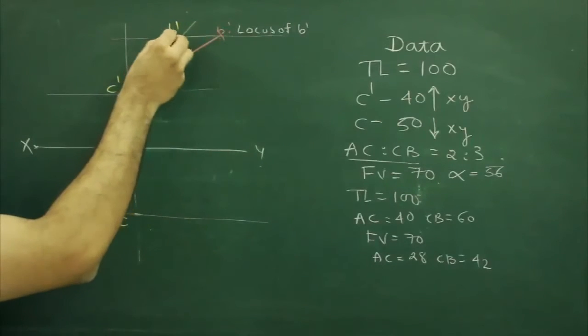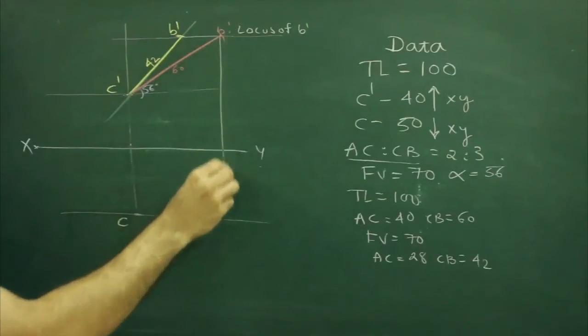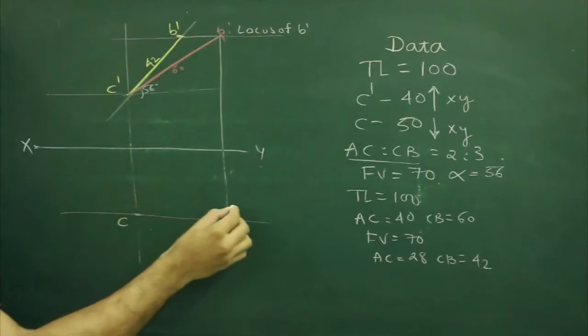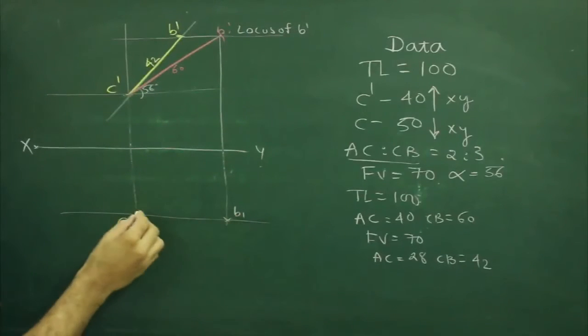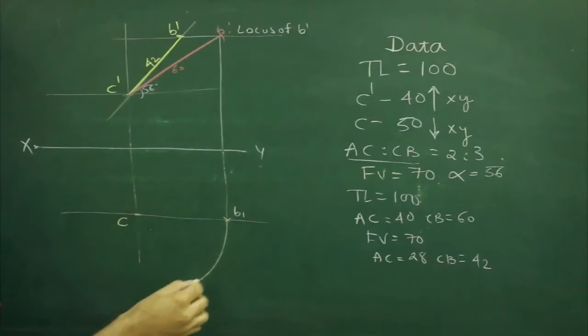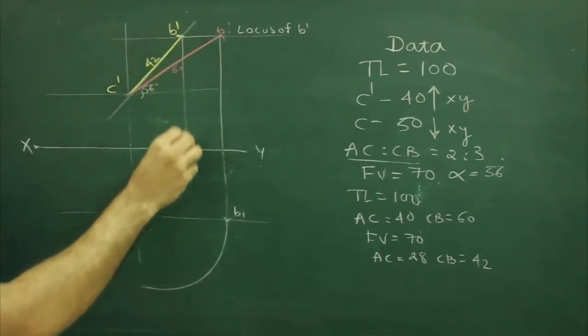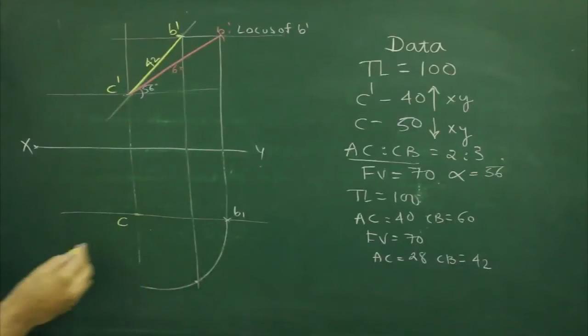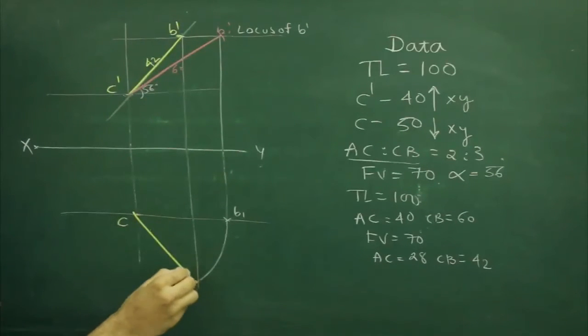Now we have B1 dash as well as B dash, we will project this B1 dash down till here, that will be B1, take C to B1, rotate and you project B dash straight down, so wherever it will cut, that point would be B.